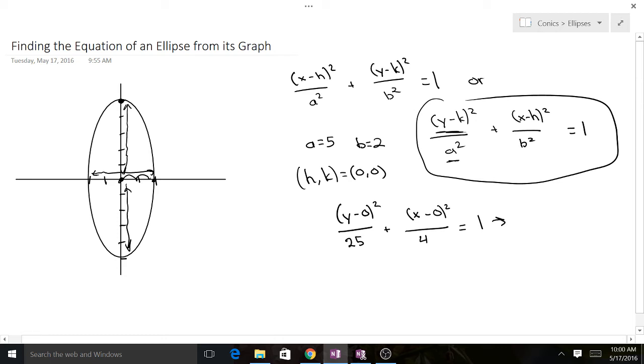And then we can simplify that a little bit. y² over 25 plus x² over 4 equals 1. And then we've gone from this graph into this equation. Thanks for watching, I hope this was able to help.